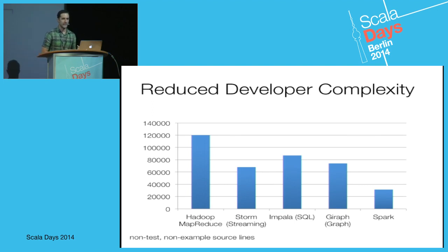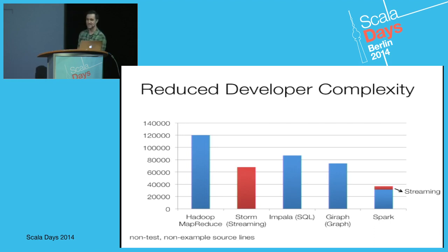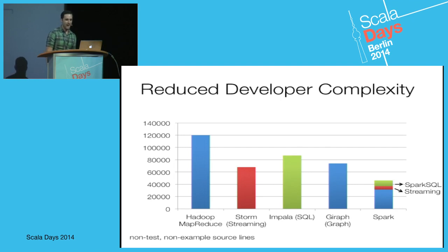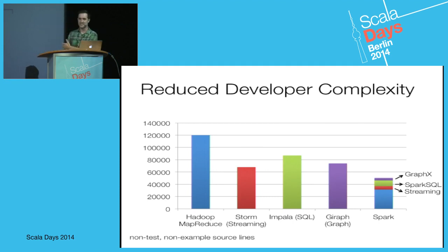What makes Spark special is we've been able to create very useful primitives that allow us to recreate some of these other systems on top of the common Spark computation engine. If you want to do streaming, you can pull in Spark Streaming — that's only about three to four thousand more lines of code. If you want SQL, Spark SQL is only another ten thousand lines of code. For fast graph processing, you can also pull in GraphX. Even after adding all these components, Spark is still significantly less complex for developers to work on.